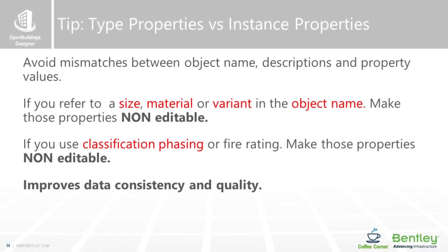To summarize the idea about type properties and instance properties: you need to avoid mismatches between a label on an object or a fixed expectation on the object and the ability for a user somewhere on the project to vary a piece of information that you're expecting to be fixed and accurate. It improves data consistency and data quality, and it's well worth sorting these problems out before you carry on.